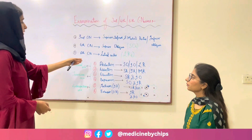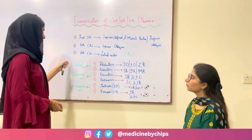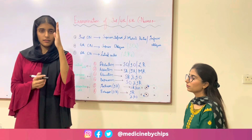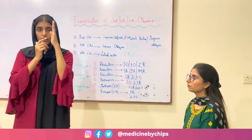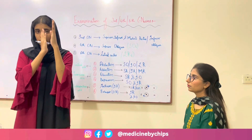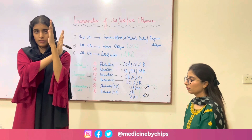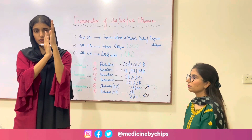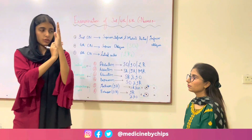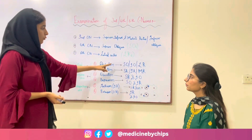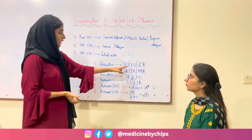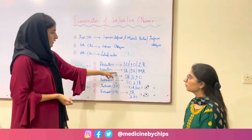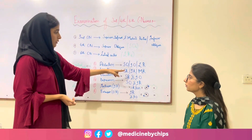The first two movements, abduction and adduction, are performed in the vertical axis. This is the vertical axis — this side is the medial side and this is the lateral side. The movement towards the medial side is adduction and towards the lateral side is abduction. Abduction is performed by the superior oblique, inferior oblique and lateral rectus. Adduction is performed by the superior rectus, inferior rectus and medial rectus.